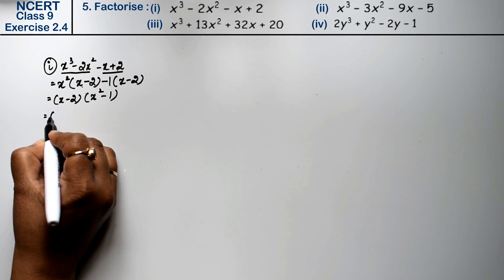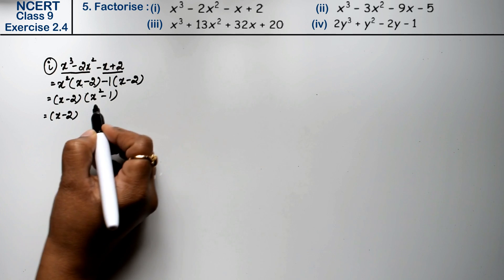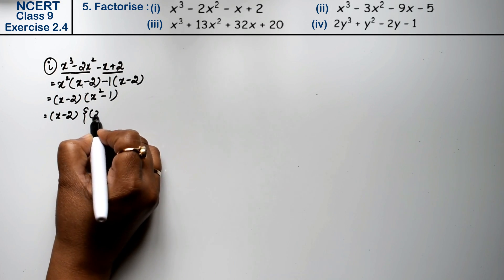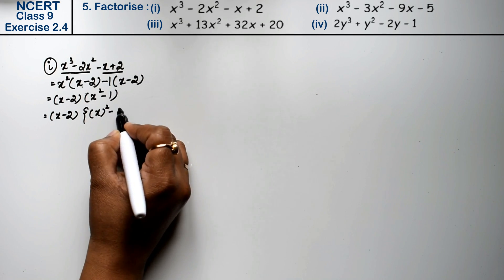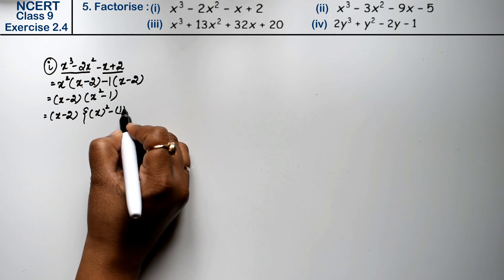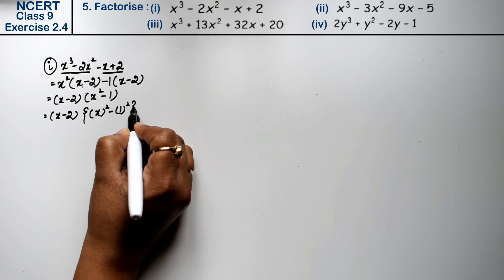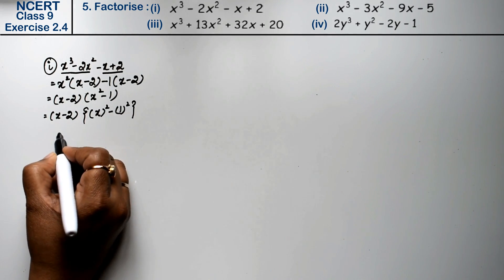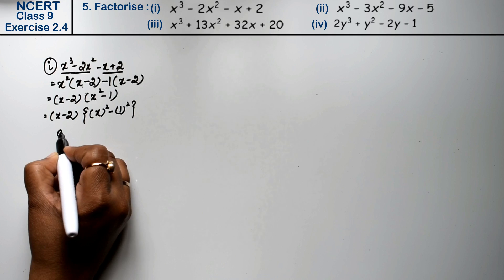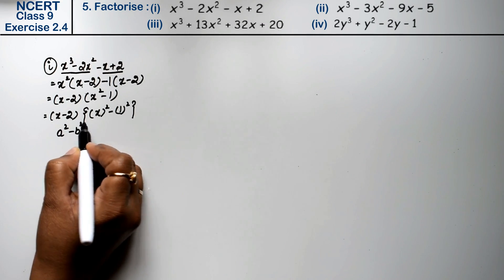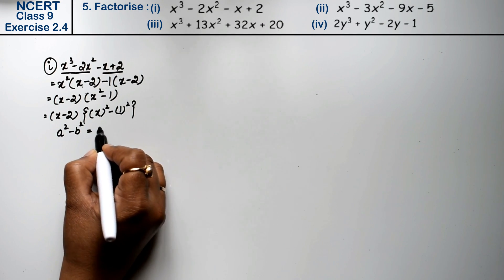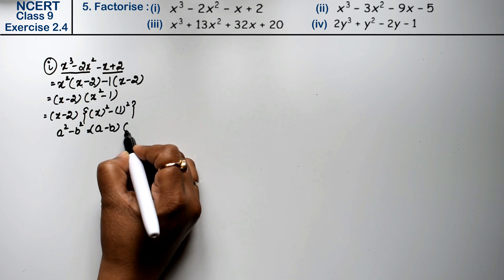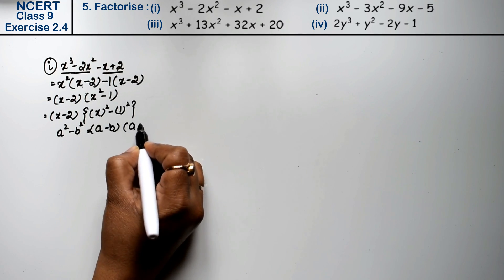Now, x minus 2 is common as it is. The remaining factor is x squared minus 1. Now x squared minus 1 is x squared minus 1 squared. The formula for a squared minus b squared is a minus b times a plus b.